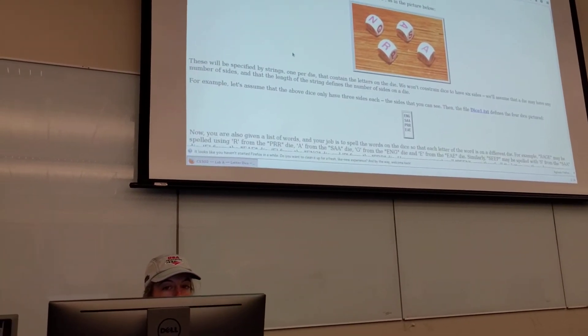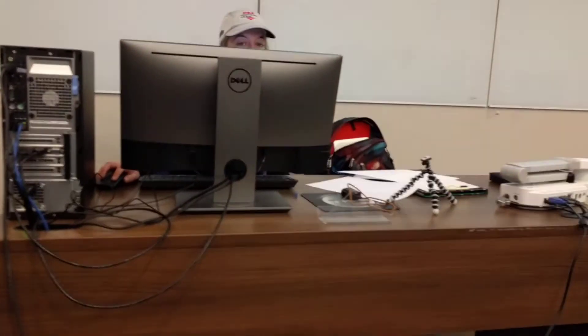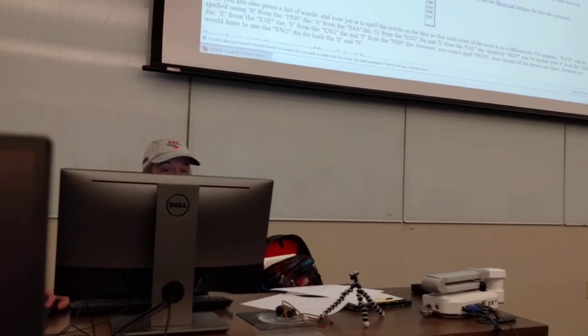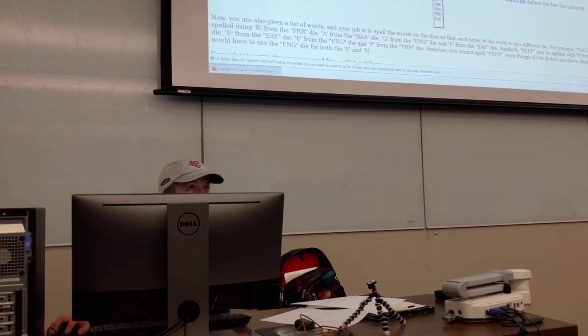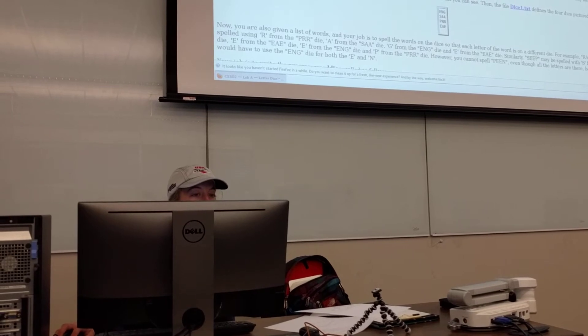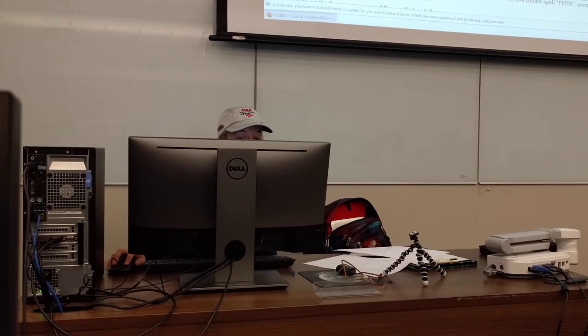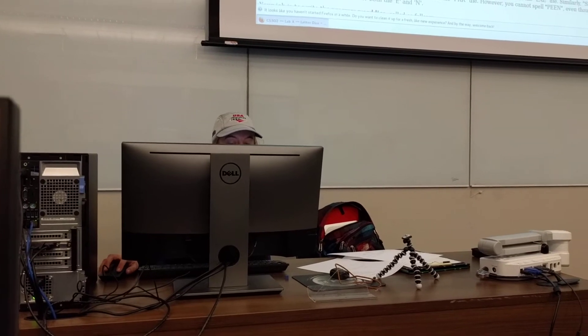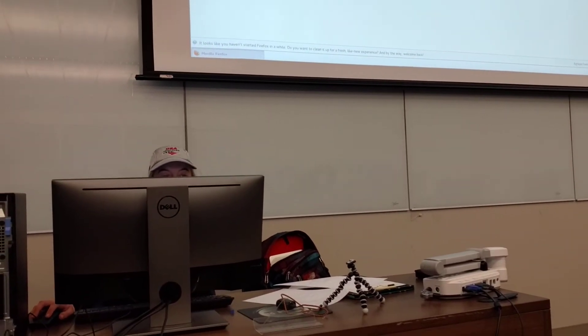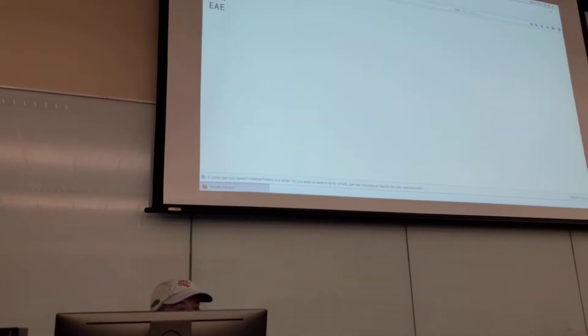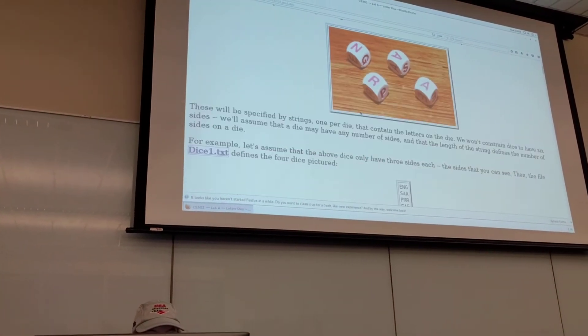You only have one program to turn in this week. It's worddice.cpp, and it's using network flow. You are going to be given some dice that have letters on each side, and might not necessarily be a six-sided dice. It could be four, it could be three, it could be some absurdly unimaginable number of dice with letters on it. They will be specified as strings, one string per die. You can see SAA is a three-sided die that starts with an S and has two As.